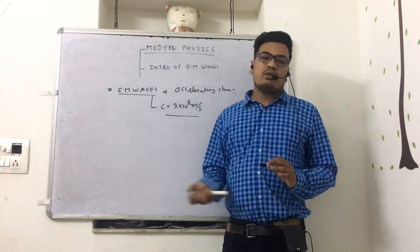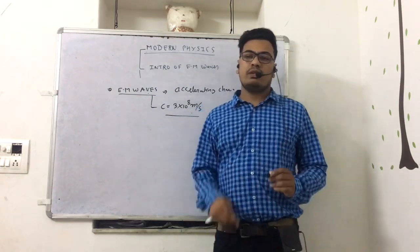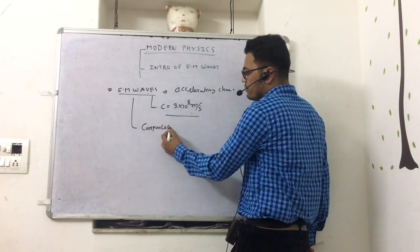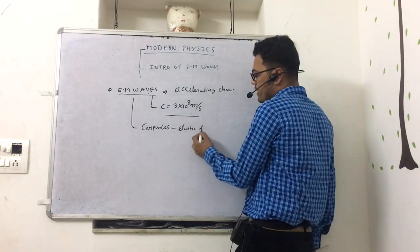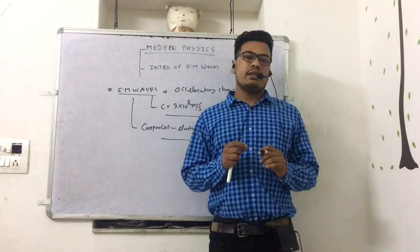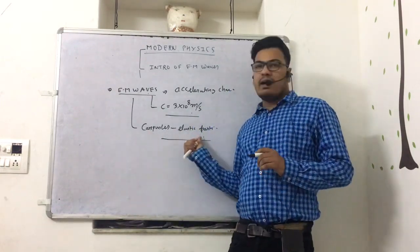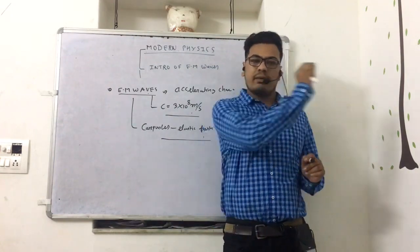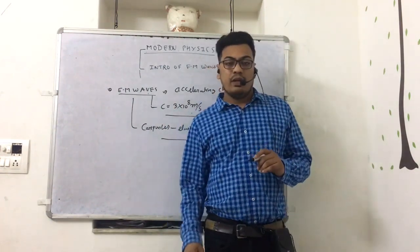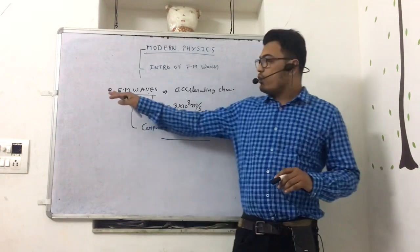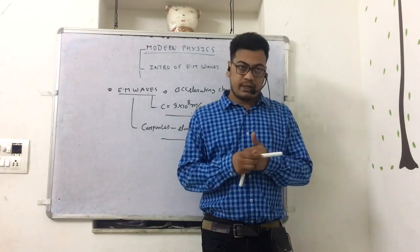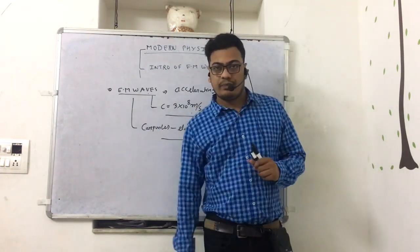First of all, Newton said that EM waves are basically called corpuscles. What does corpuscles mean? Corpuscles is an elastic particle — a very small elastic particle. Newton said the wave is made of very small tiny particles called corpuscles. Then Huygens said that the electromagnetic wave is actually a wave property. But at that time, Newton was more famous, so Newton's view had more priority.